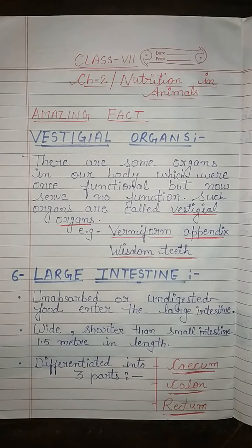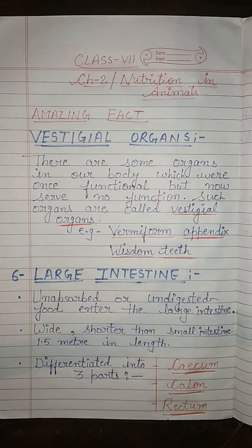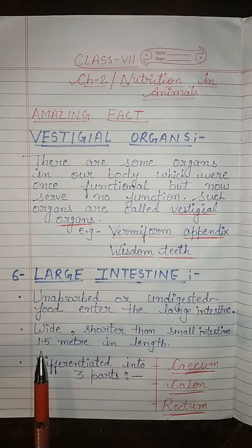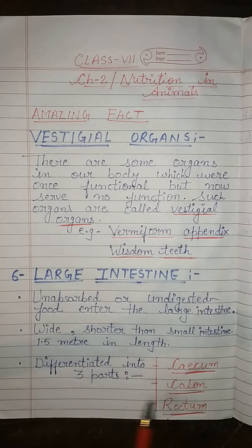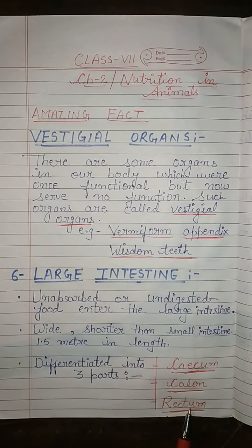Large intestine — kaisi hoti hai, kitni lambi hoti hai? Compare karenge hum small intestine se. Large intestine as compared to small intestine kaafi zyada wide hoti hai, but shorter hoti hai. Small intestine 7.5 meters thi, but yeh 1.5 meters in length hoti hai. Is large intestine ko hum differentiate kar sakte hain three parts mein: cecum, colon, and rectum.